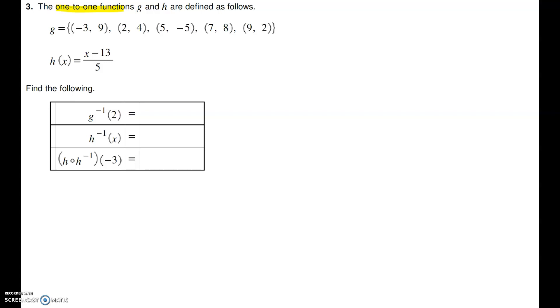For the first one, we have to find out G inverse of 2. If you understand the ordered pairs, it says that G takes the element negative 3, the x value, to the y value 9. The second ordered pair 2 comma 4 tells us it takes the input 2 and output becomes 4. That's how the ordered pairs are defined.